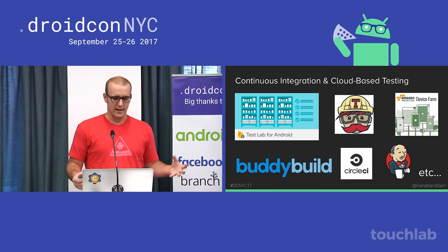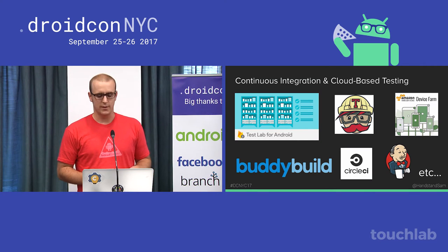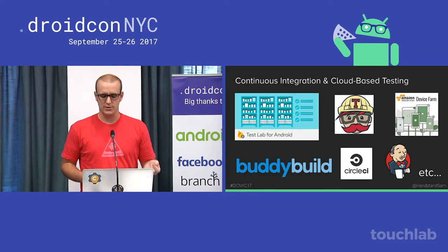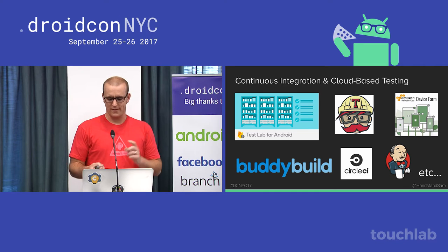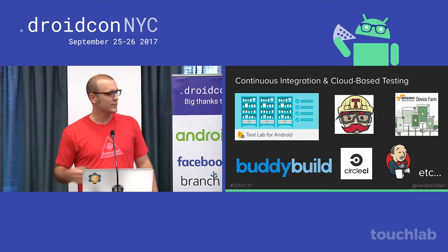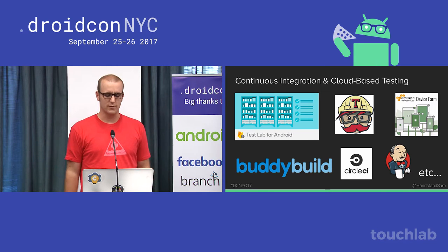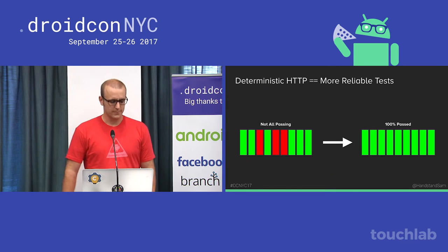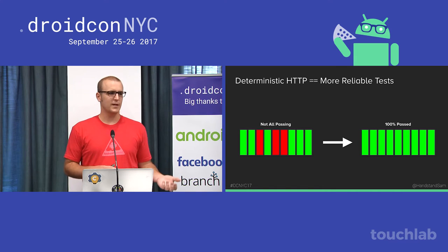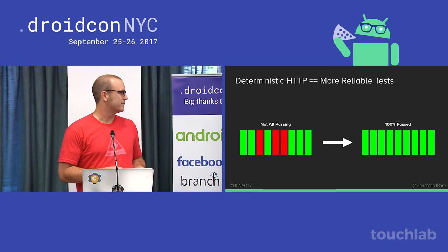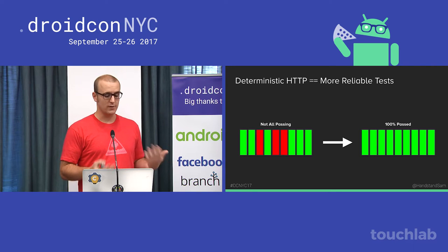The goal with really stable tests is to run them every single time you make a code change. Hopefully you have continuous integration set up, so every time you make a pull request or code change, you run that on Jenkins, Travis, Buddy, Build, Circle CI, Firebase Test Lab, Amazon Device Farm, or your own custom solution. The goal is that every single time you run your tests, they pass — unless you change something in the code that makes them fail. There are a lot of things that can make tests fail, but if you take HTTP out of that equation, your tests are a lot more stable.